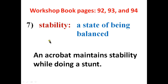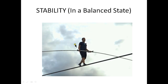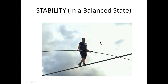Number seven word is 'stability.' Stability means a state of being balanced. The sentence is: an acrobat maintains stability while doing a stunt. Here is a tightrope walker — if he doesn't maintain his stability he will fall, but if he maintains his stability he will do his work very well and maintain his balance properly.